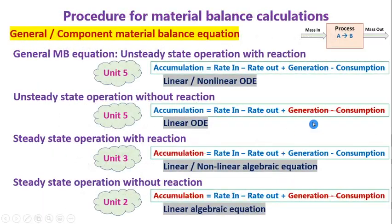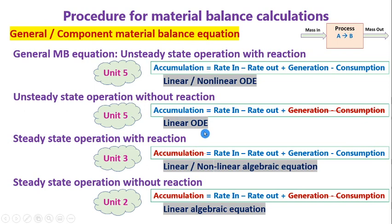In Unit 2 we covered linear algebraic equations arising from steady state balances without reactions. In the next unit we included reactions as generation and consumption terms, ending up with independent linear equations. In Unit 4 we covered energy balance equations. Now in Unit 5 we are moving to unsteady state equations where the accumulation term comes into the picture — a term we had set to zero in earlier units.